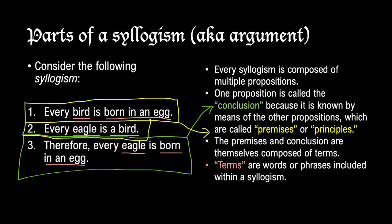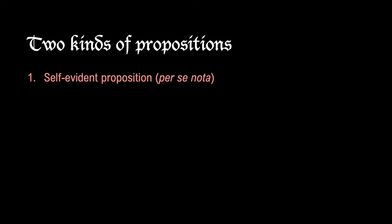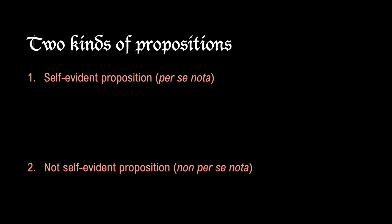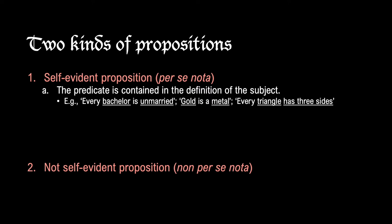There are two kinds of propositions: self-evident propositions, called in Latin per se nota, and non-self-evident propositions, called non-per se nota. These Latin phrases should be memorized. There are three kinds of self-evident propositions. The first is one in which the predicate is contained in the definition of the subject — for instance, 'every bachelor is unmarried,' 'gold is a metal,' 'every triangle has three sides.' The proposition is obvious precisely because the predicate is contained in the definition of the subject.